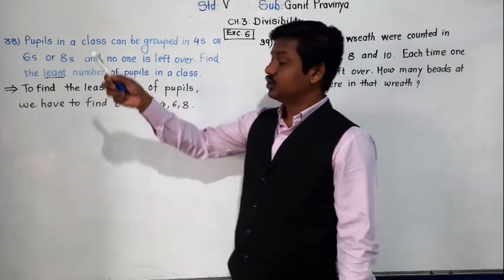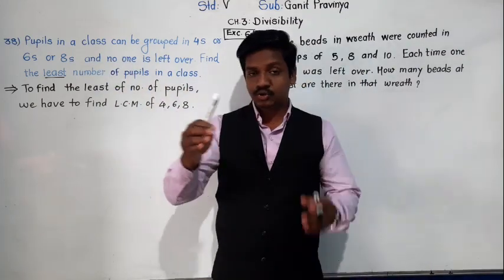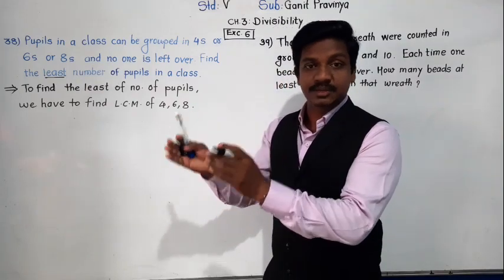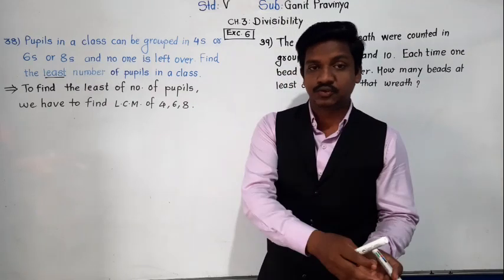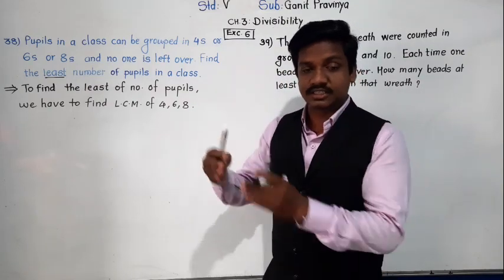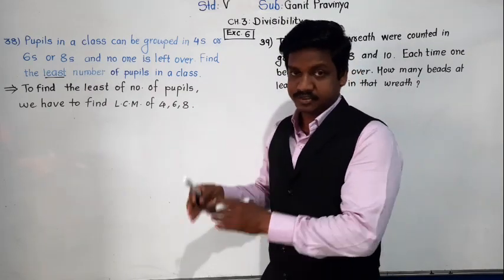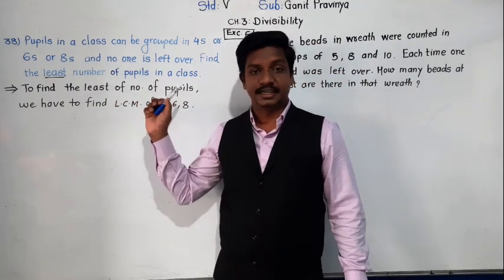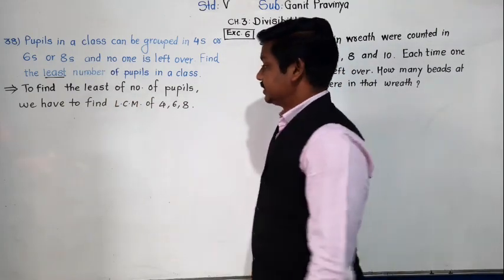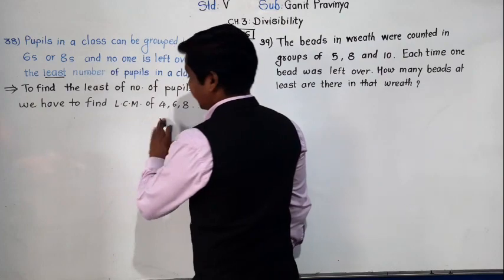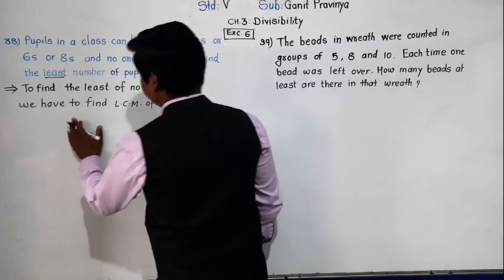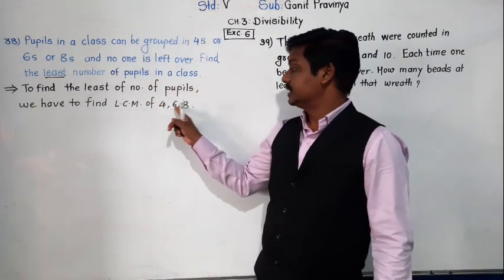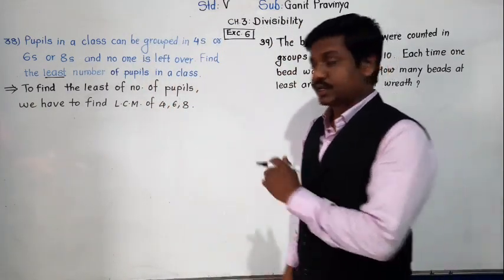So here, we have to find such a number which can be grouped into 4s or 6s or 8. Such a number means the LCM of 4, 6 and 8. Let's find the LCM by prime factorization. Here there are 3 numbers: 4, 6 and 8.